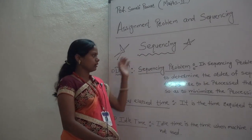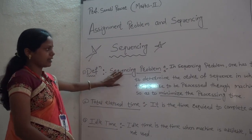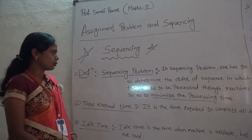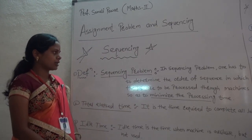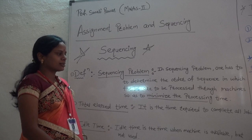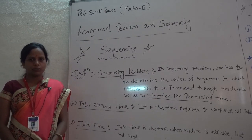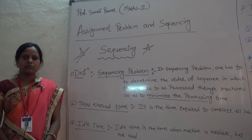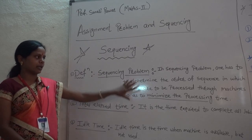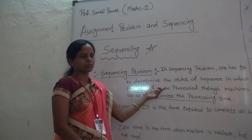What is sequencing? What is total elapsed time? What is idle time? In a sequencing problem, one has to determine the order or sequence in which the jobs are to be processed through machines, so as to minimize the processing time. The goal is to find the minimum processing time, and for that we learn the sequencing problem.